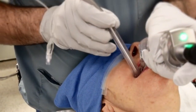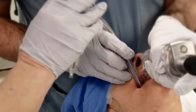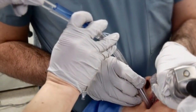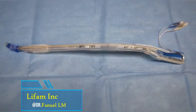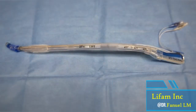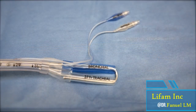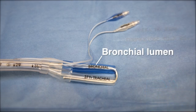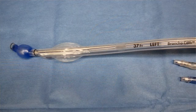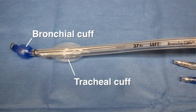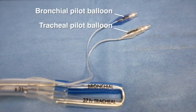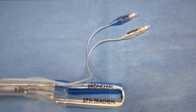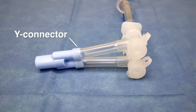Placement of a double lumen endotracheal tube is an airway management technique that permits isolation and selective ventilation of a single lung. Double lumen endotracheal tubes consist of a bronchial lumen and a tracheal lumen. The bronchial lumen is longer with a distal opening designed to be placed in the right or left main stem bronchus. The tracheal lumen is designed to be placed above the carina. Each lumen has a color-coded cuff, often blue on the bronchial lumen and clear on the tracheal lumen, as well as a color-coded pilot balloon. A Y connector connects both lumens to the breathing circuit.